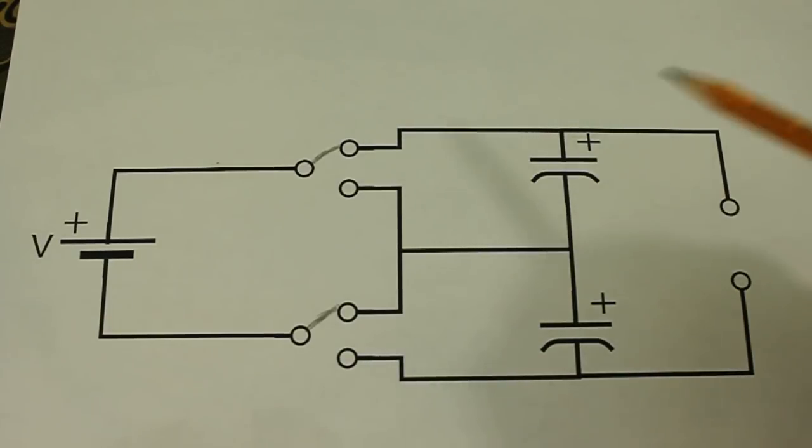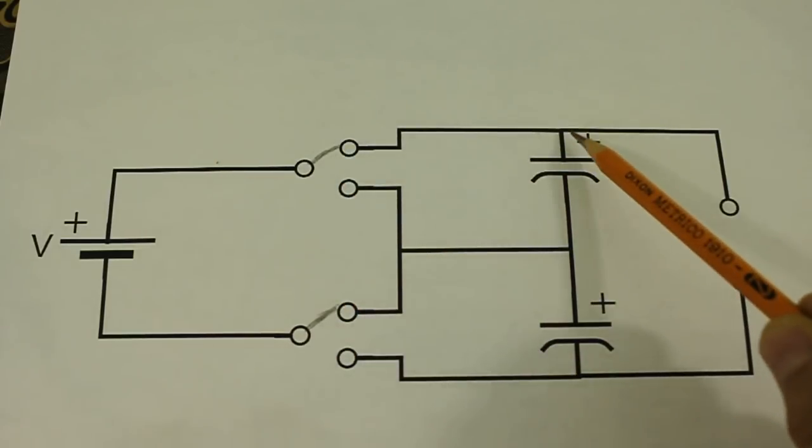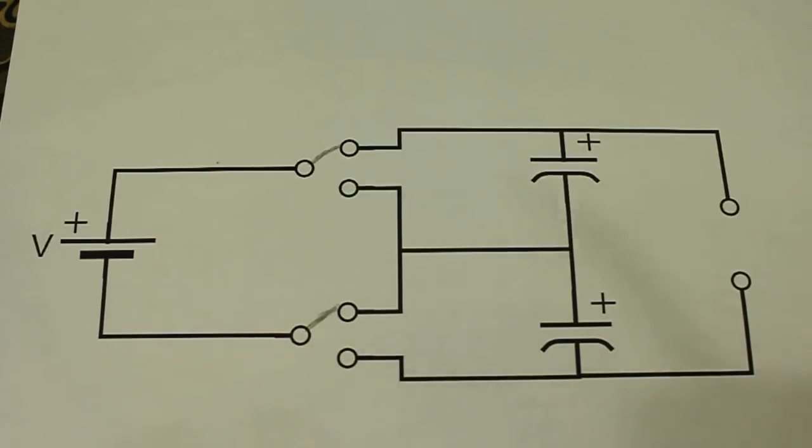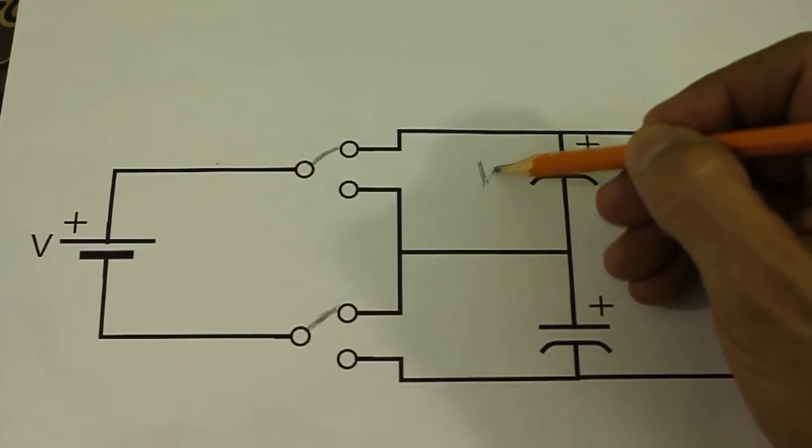In this position of the switches, note that the current flows here to the first capacitor and back to the battery. Therefore, this capacitor will be charged to the voltage of the input.